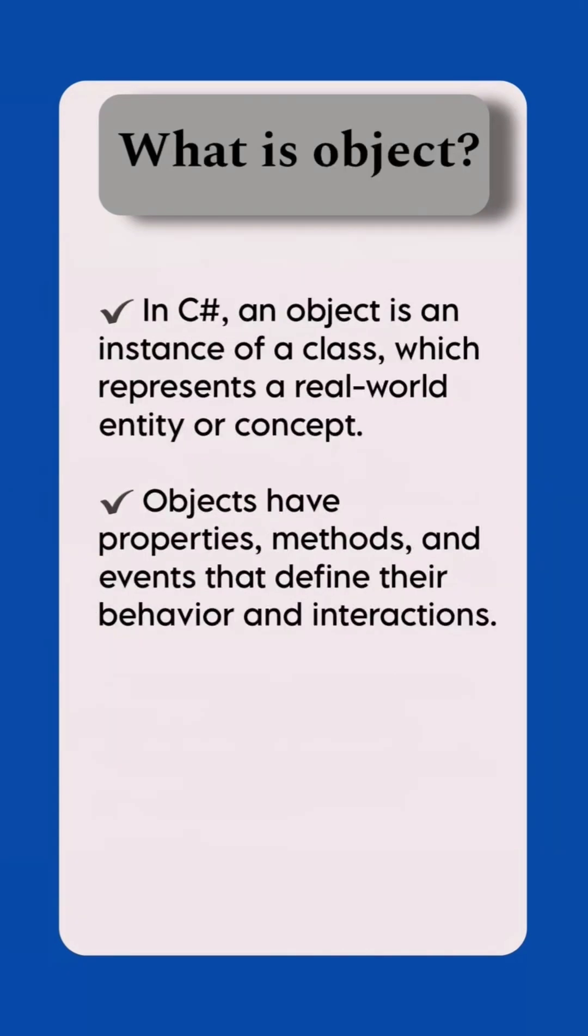What is object? In C#, an object is an instance of a class, which represents a real-world entity or concept. Objects have properties, methods, and events that define their behavior and interactions.